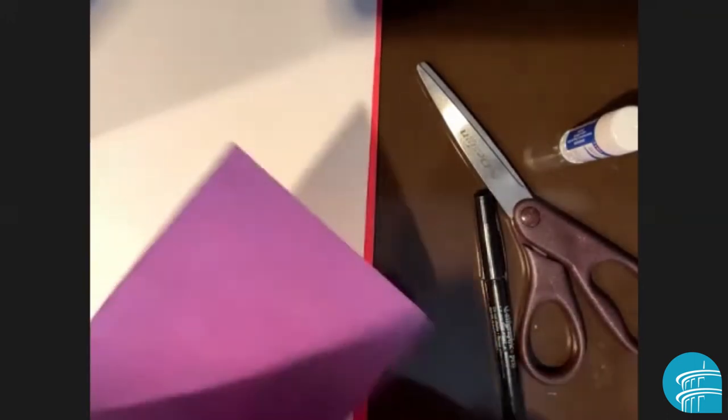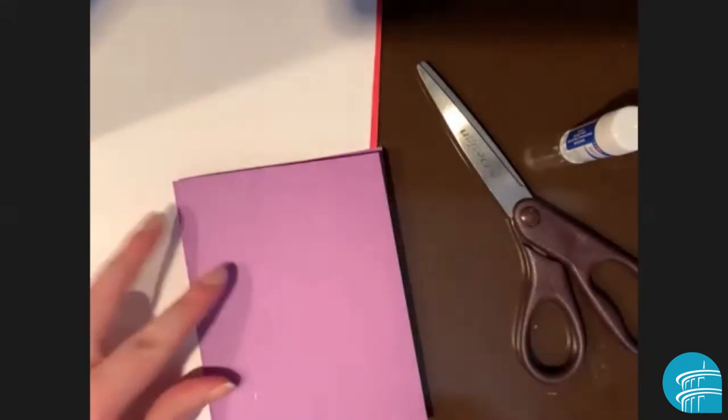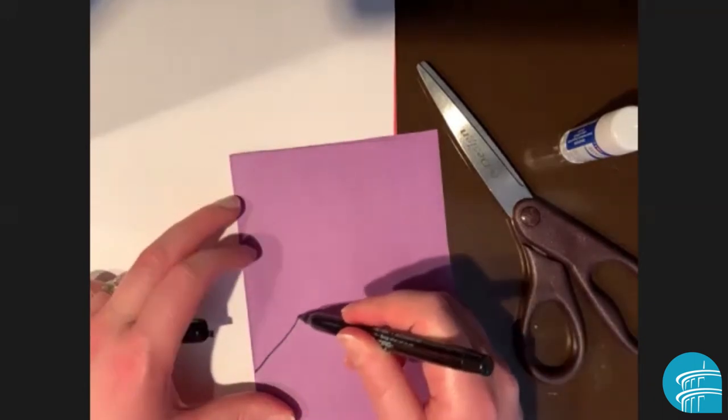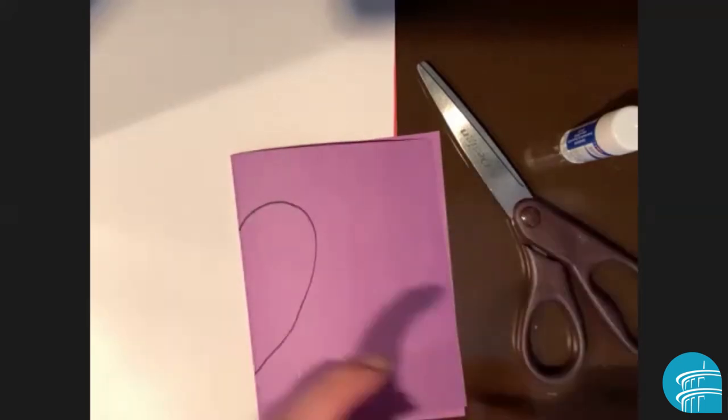So to start with, we are going to need to make our heart. I'm going to fold my piece of purple paper in half and then on that fold I am going to draw half of a heart with my marker like so.